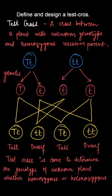If the phenotypic ratio of tall and dwarf plant is one is to one, then the unknown parent is heterozygous. And if all the offspring are tall, then the unknown parent will be homozygous.